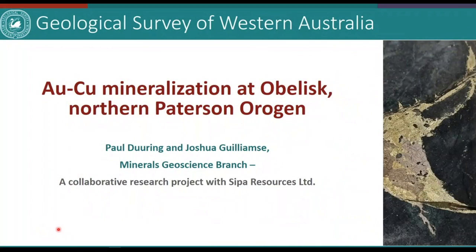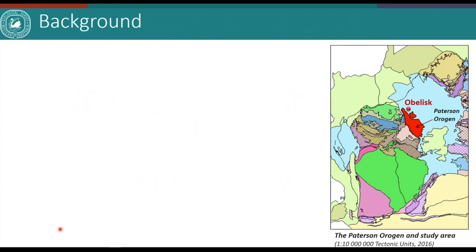This presentation is a summary of work completed on the Obelisk deposit in the North Paterson orogen. The Paterson orogen is located in the northern part of Western Australia, along the boundary of the Pilbara craton and towards the northeast of the Yilgarn craton. Obelisk is located in the northern part of the orogen.